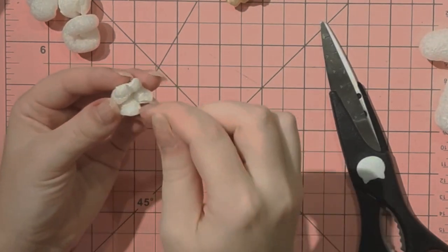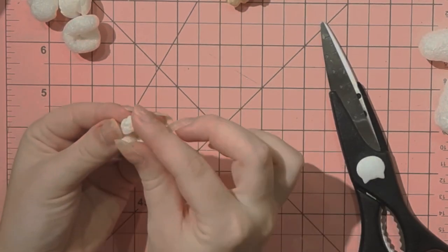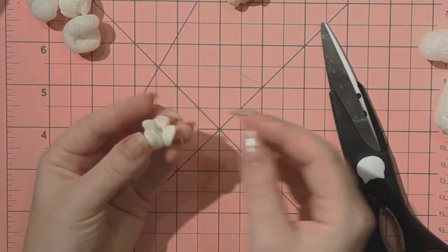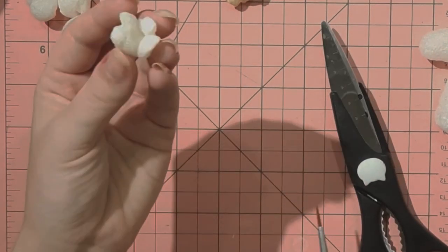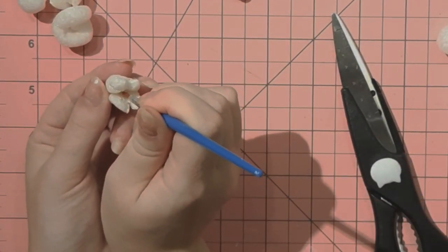Packing peanuts dissolve in water, so I'm dipping my finger in some water and making an indent in the middle to create that scoop inside the popcorn. Lastly, just like we did with the filler popcorn, I'm taking my acrylic paint again and painting in that popped kernel.